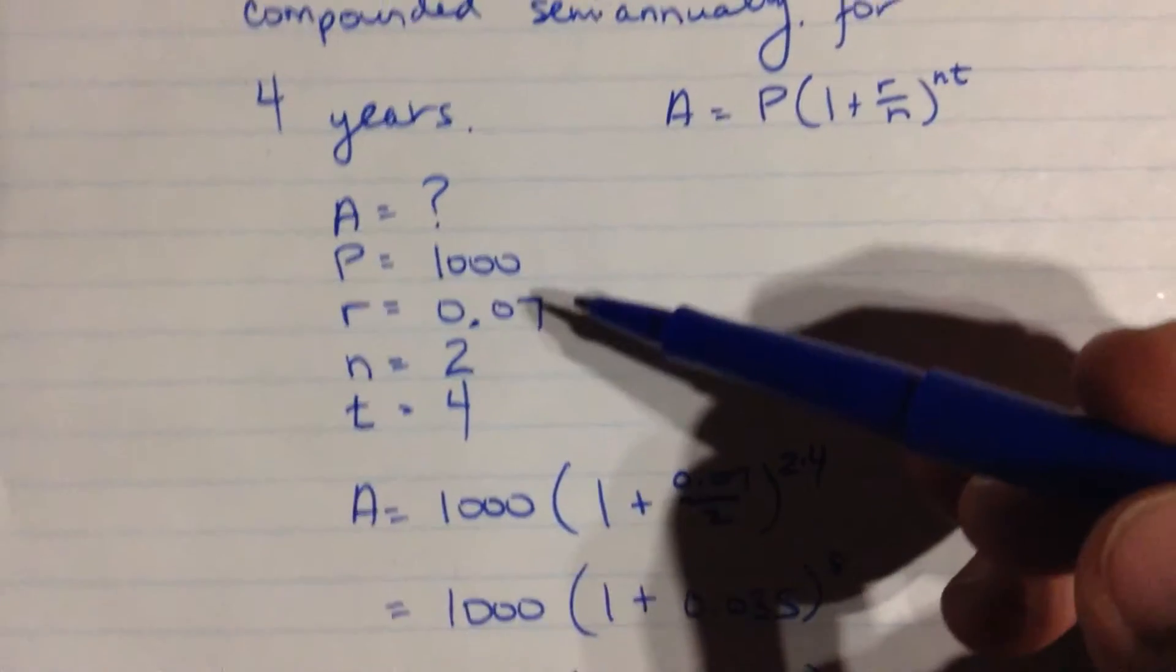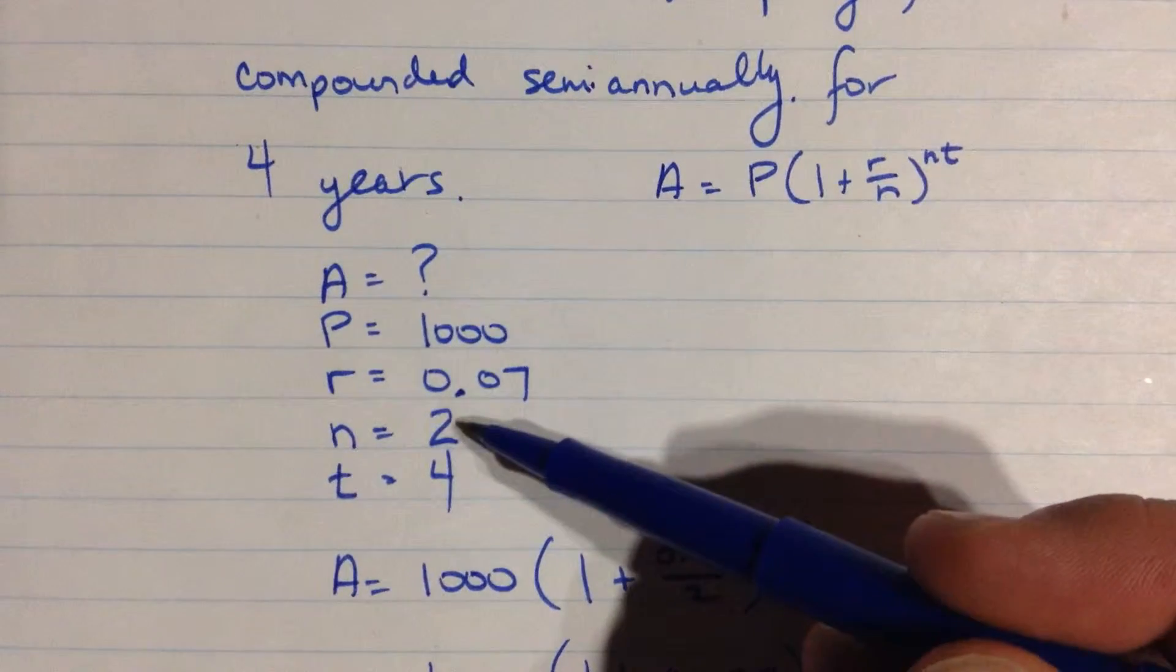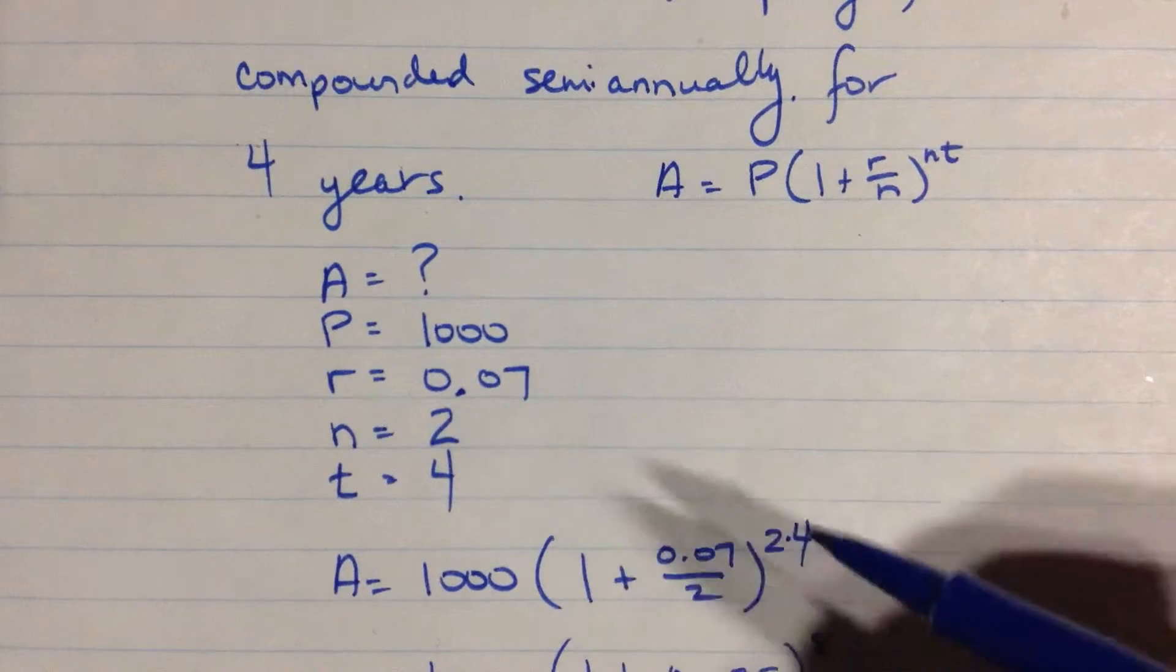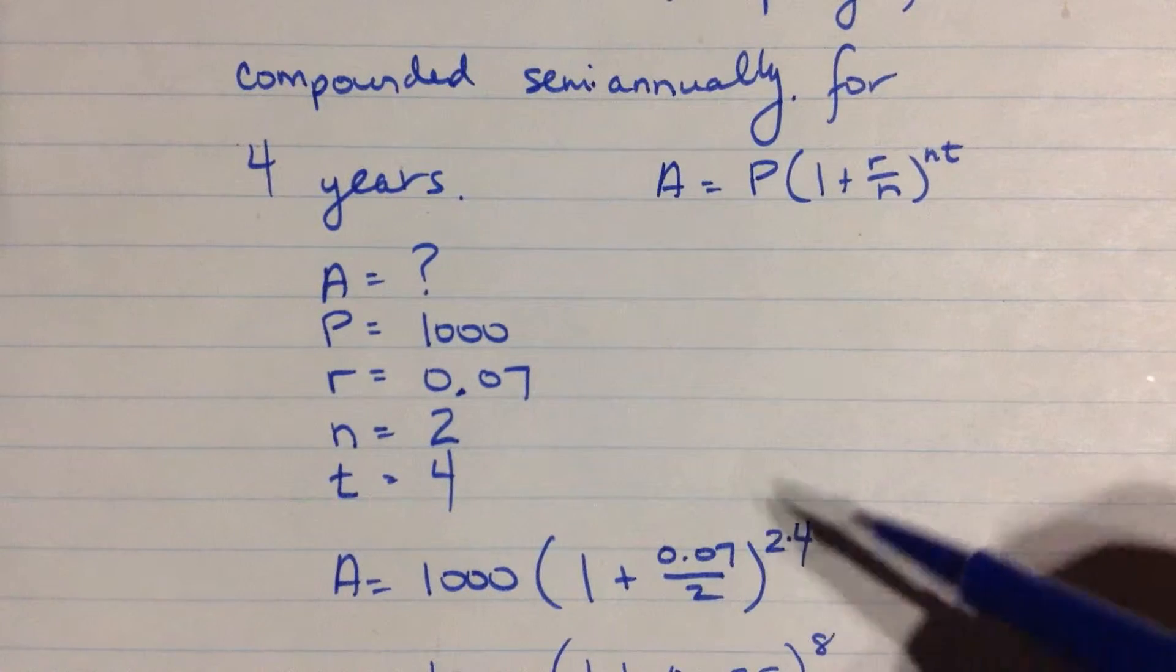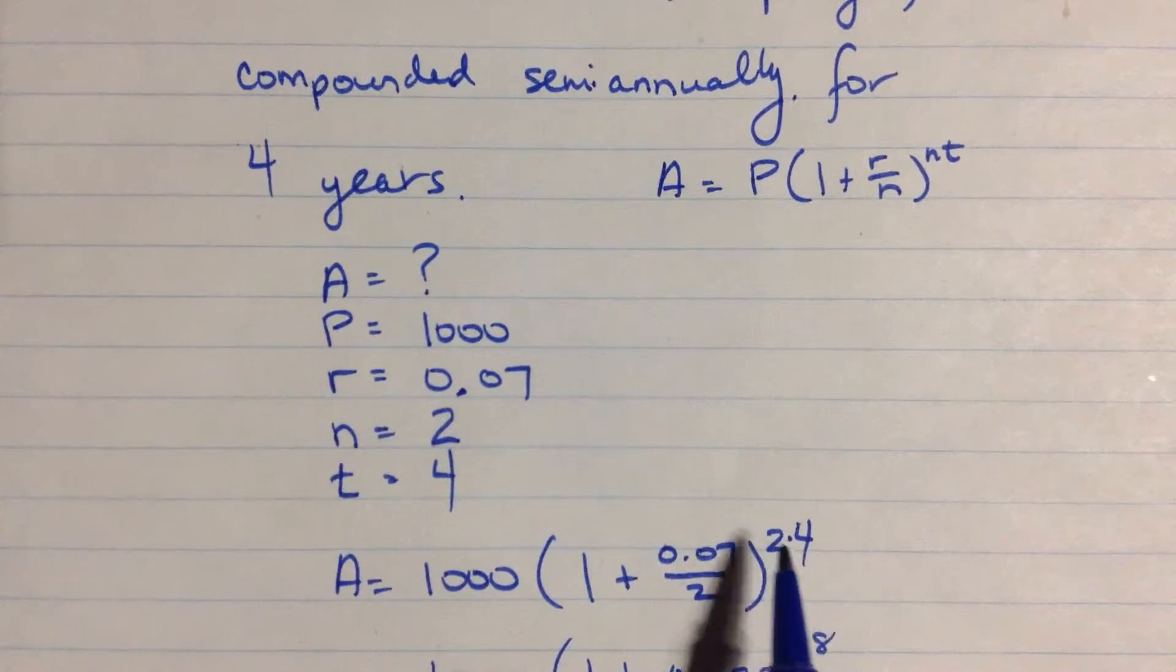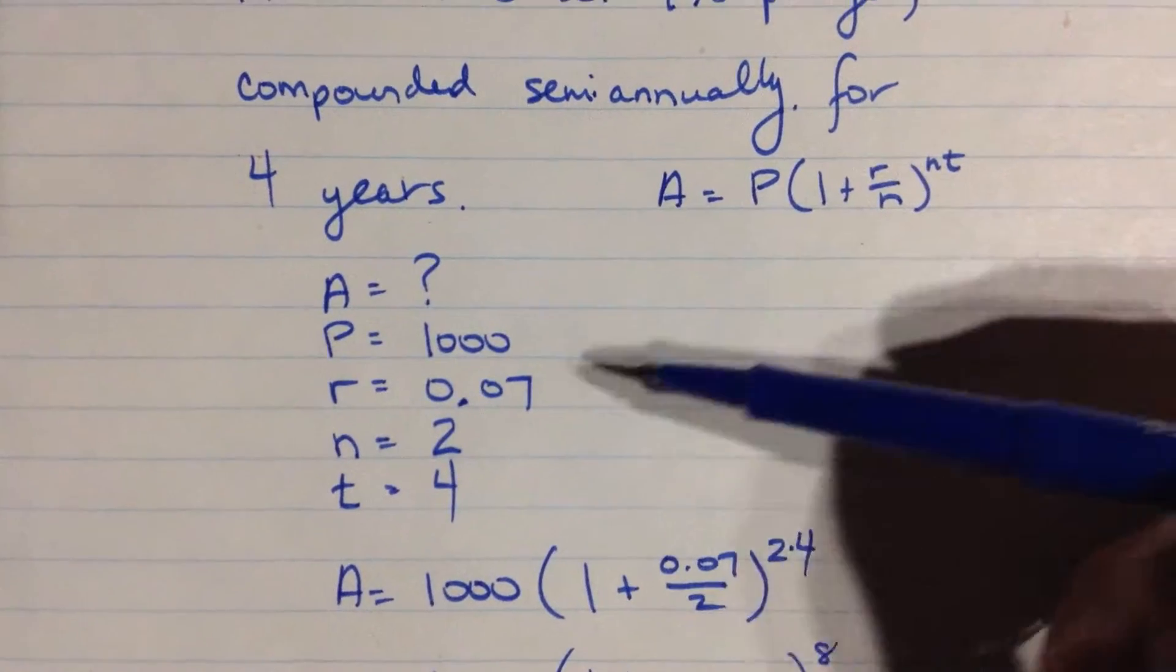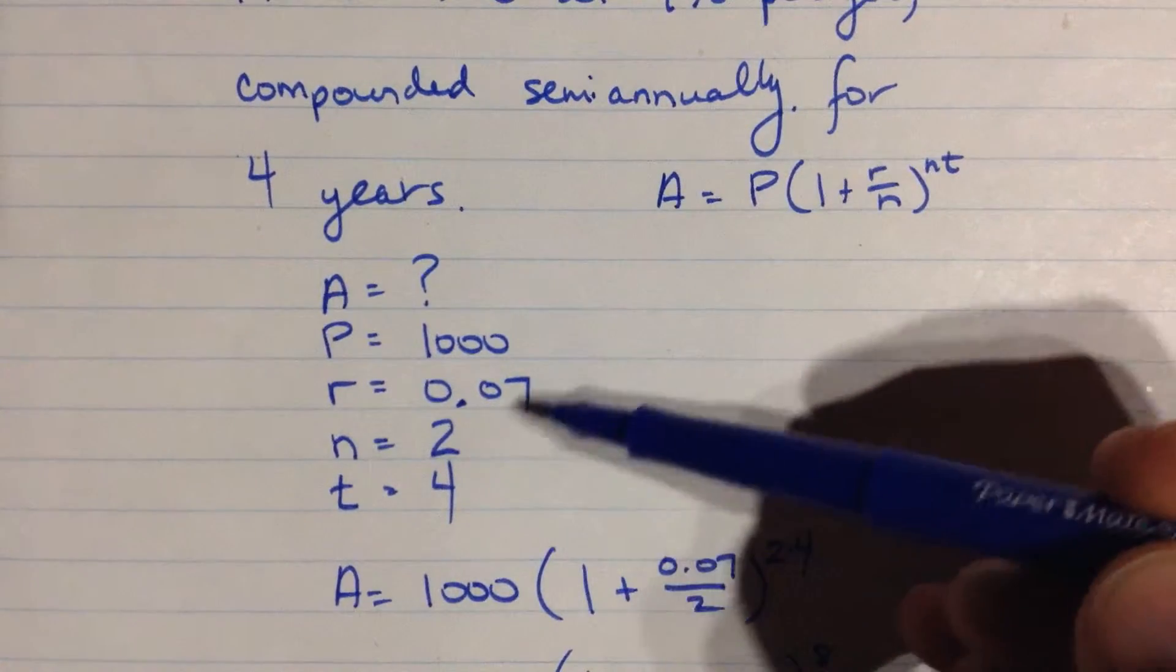So effectively what we've done is cut the rate, divided it by the number of compounding periods in a year, and then we've raised this expression up to that many more. We've multiplied the year by the number of compounding periods. So here we have four years, we compound twice a year, but only by half as much. Let's do another one, similar one.